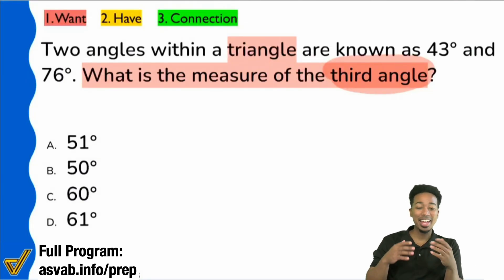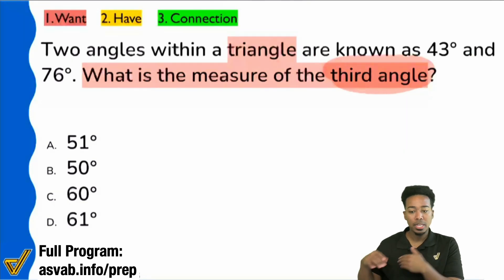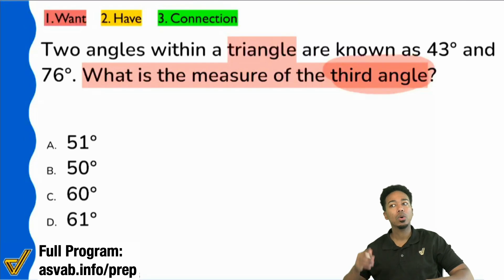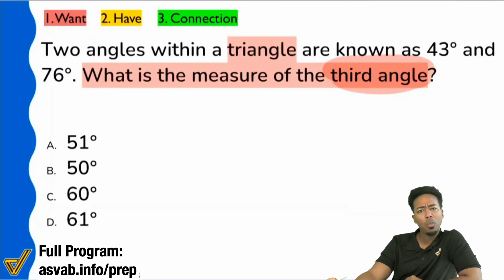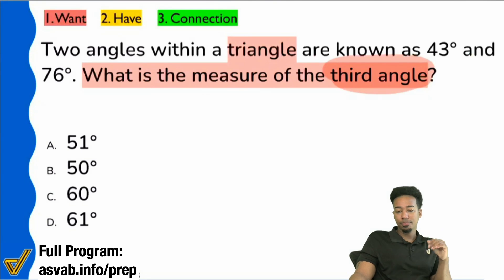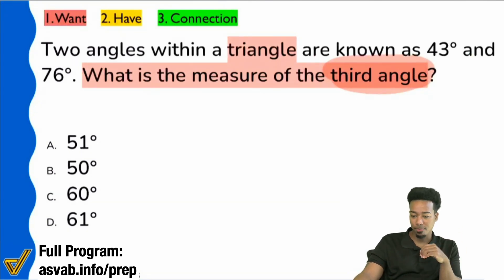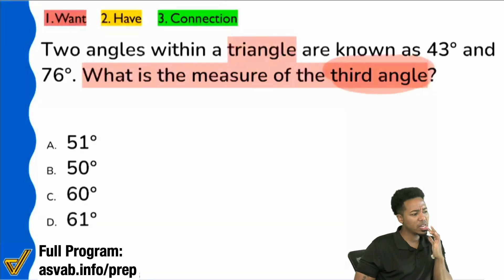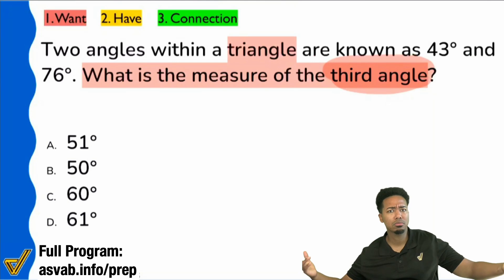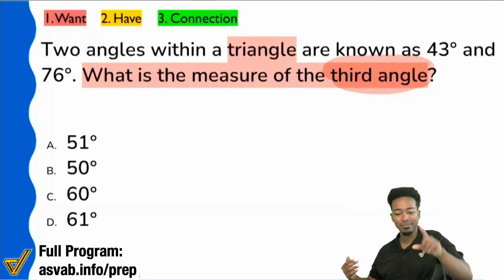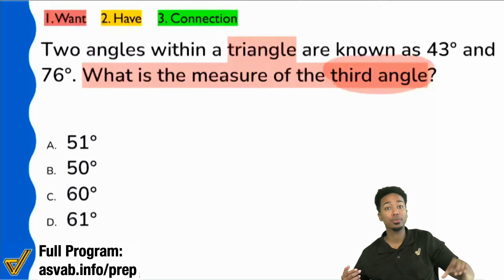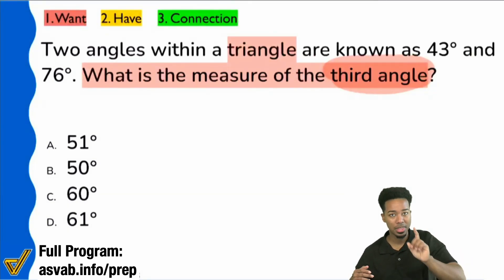Let's get back to the problem. The next question is: how do we find that third angle inside of a triangle? What mathematical fact do you know about the angles of a triangle? Some of us are saying 180 — they add up to 180. But can anybody tell me how many angles? One, two, three, four, seven? Can we be specific here? Three.